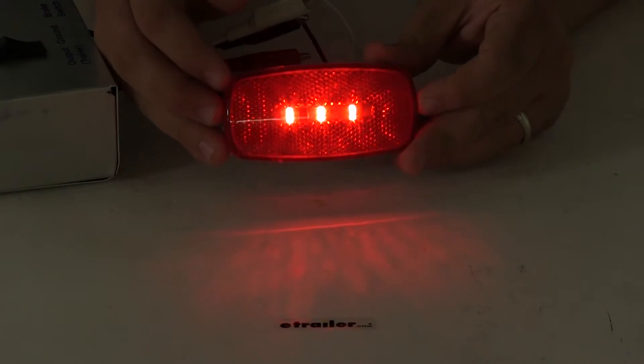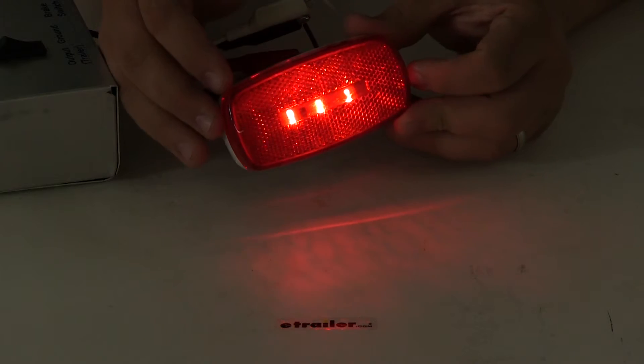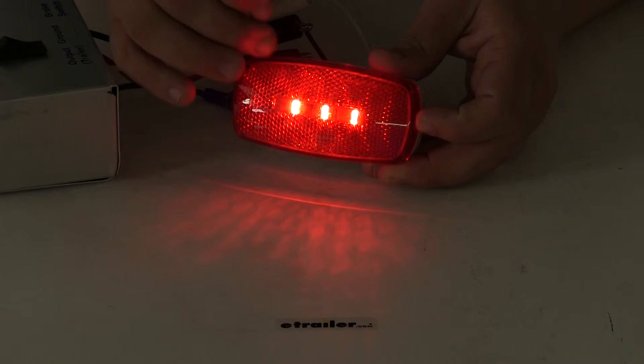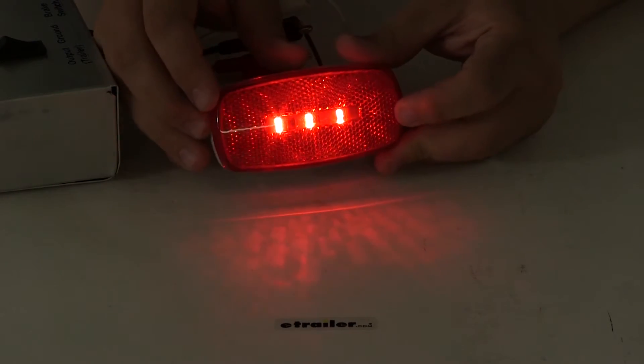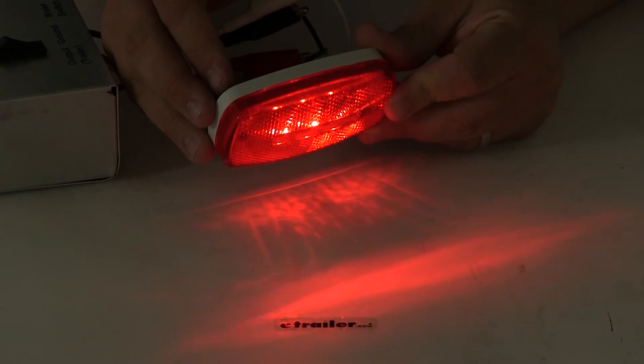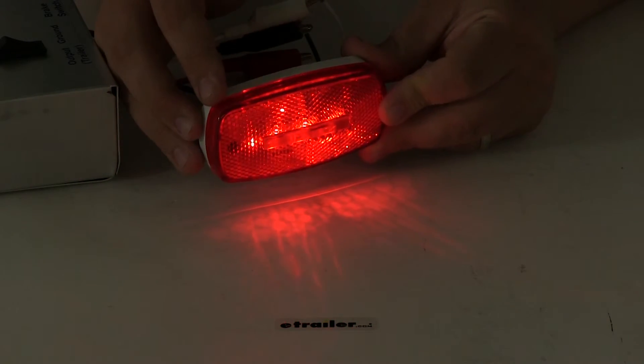So here you can see it sends out a really nice clear consistent signal. You can see the reflection taking effect there of that built-in reflex reflector on the lens. Three diode design is going to optimize your light output sending out a really nice clear consistent strong signal.